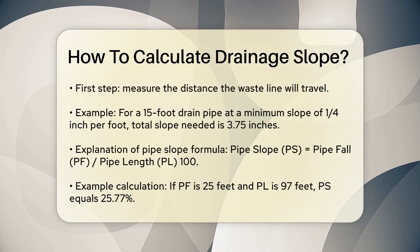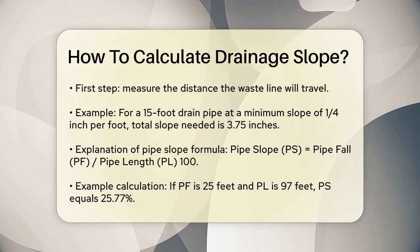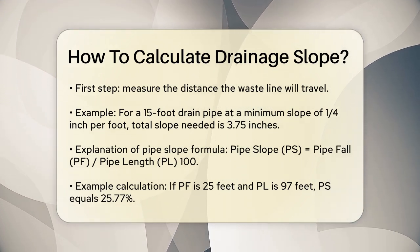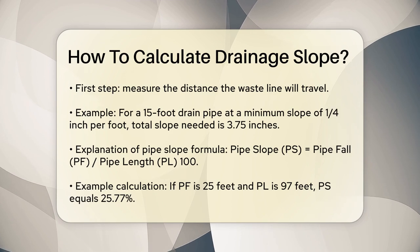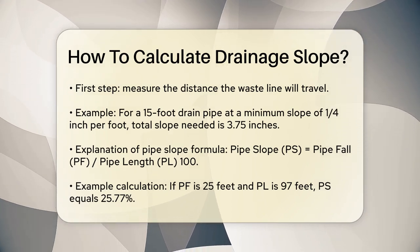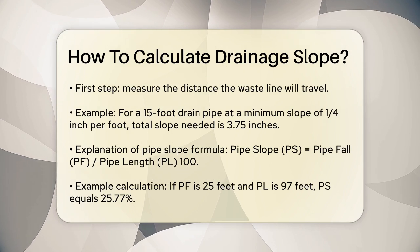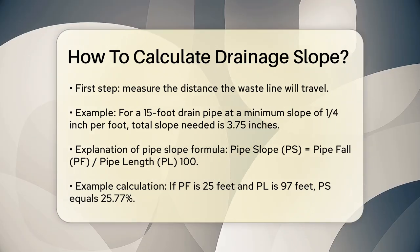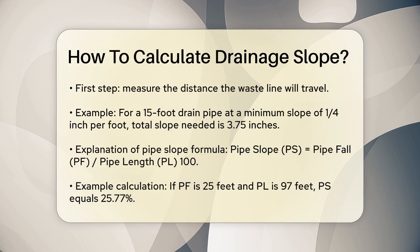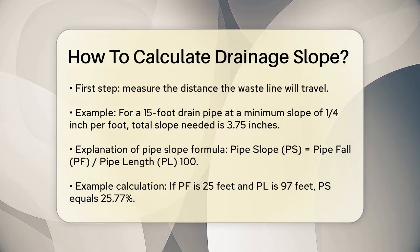Let's use a simple example. If your drain pipe is 15 feet long and you want to slope it at the minimum ¼ inch per foot, you multiply the slope by the length of the pipe. So ¼ inch per foot multiplied by 15 feet equals 3.75 inches. This means the drain pipe needs to slope a total of 3.75 inches from the start to the end.